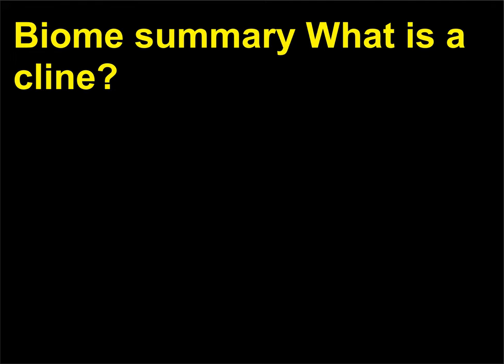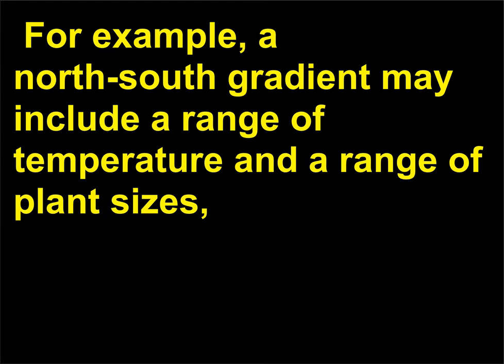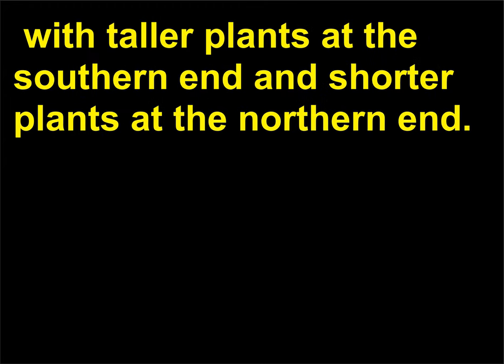Biome Summary: What is a Cline? A cline refers to geographic variation due to a gradient of climatic features. For example, a north-south gradient may include a range of temperature and a range of plant sizes, with taller plants at the southern end and shorter plants at the northern end.